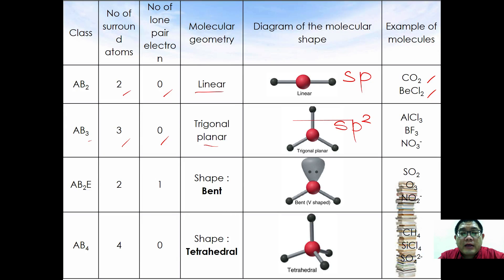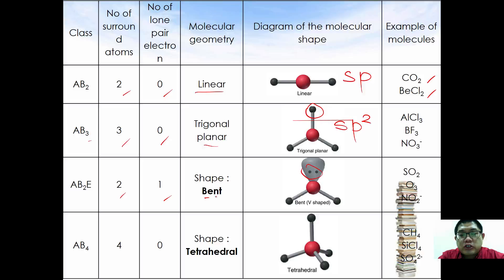If we change one of the surrounding atoms to a lone pair electron, so you have two bond pairs and one lone pair, the molecular arrangement is similar to trigonal planar. However, the molecular geometry takes the shape of a bent shape. Examples are sulfur dioxide, ozone, and nitrite ions.